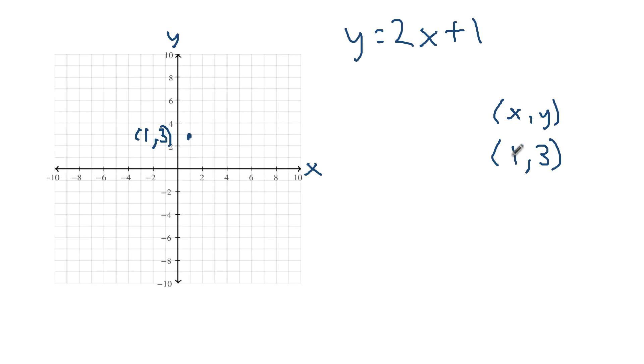So far so good. We plotted one point. Let's find another point. Let's plug in x equals 2. If we go to the equation, 2 times 2 is 4, 4 plus 1 is 5. So when x is 2, y is 5. Where is (2,5)? Start at the origin, go right 2, and then up 5. And so this point right here is (2,5).